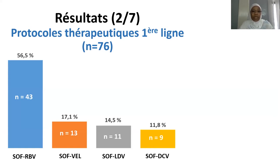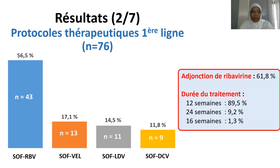Les protocoles thérapeutiques utilisés en première ligne étaient au nombre de 4 : le sofosbuvir-ribavirine utilisé chez 56% des patients, le sofosbuvir-velpatasvir chez 17%, le sofosbuvir-lédipasvir chez 14%, et le sofosbuvir-daclatasvir chez 12% des patients. Le choix de ces protocoles a été dicté par les recommandations thérapeutiques du moment, mais également par la disponibilité et le coût des médicaments. La ribavirine a été utilisée chez 62% des patients et la durée du traitement était de 12 semaines chez près de 9 patients sur 10.